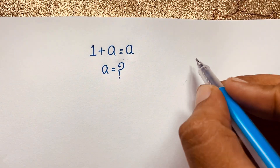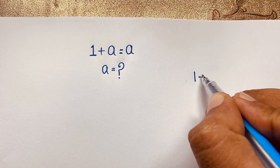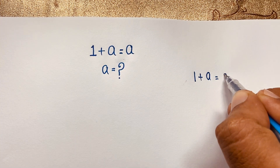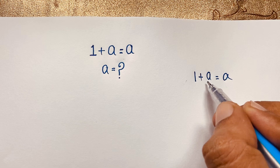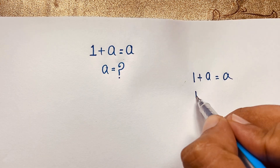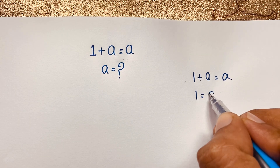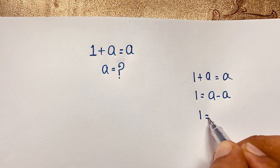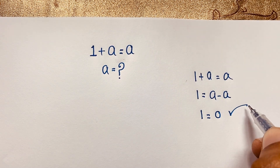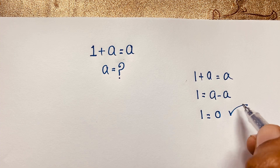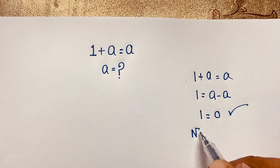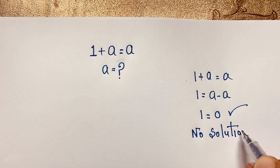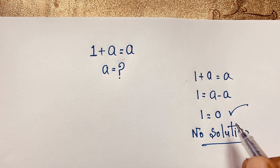Because 1 plus a is equal to a, if I move the a to this side it will be 1 is equal to a minus a, so it will be 1 is equal to 0. The left hand side and right hand side are not equal, so you can see there is really no solution in this math problem.